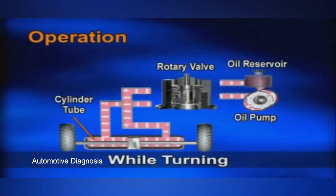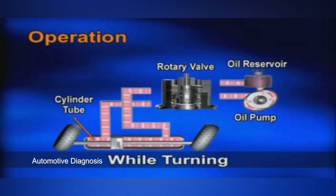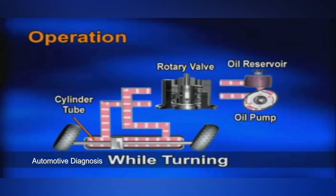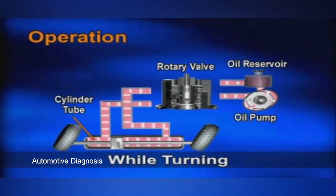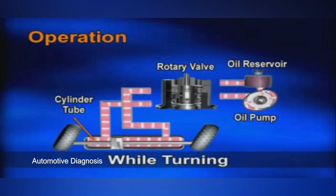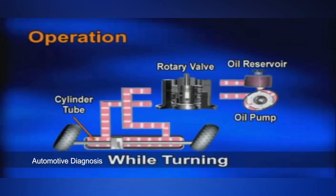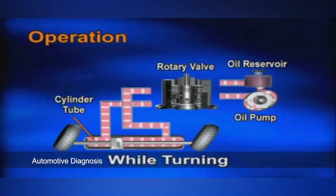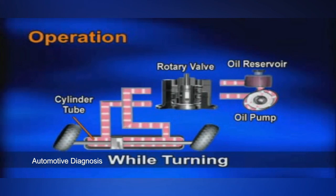Once past the valve sleeve, the fluid flows to the rack piston, where it pushes against the rack piston. As the piston moves, it forces the fluid on the opposite side of the piston out of the power cylinder. This fluid flows back to the gear housing and enters the spool valve through the opposite groove on the outside of the valve sleeve. Once at the spool valve, the fluid flows through the drilled passages to the valve center and returns to the pump.